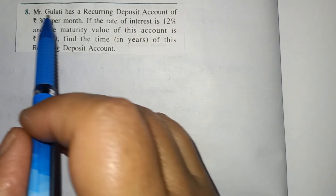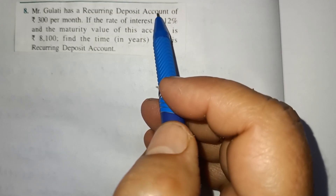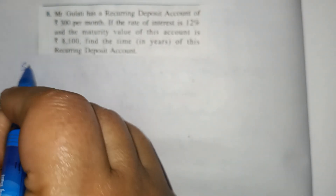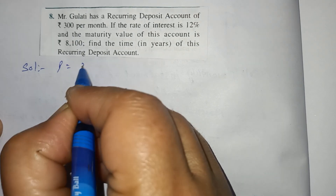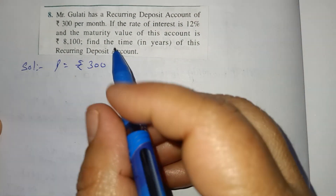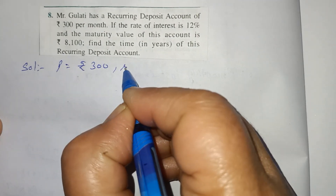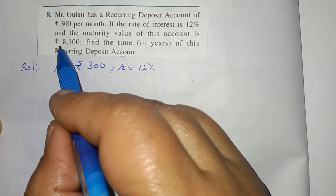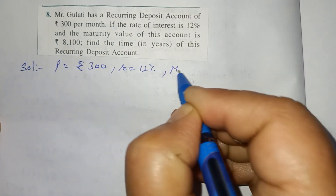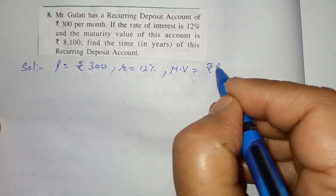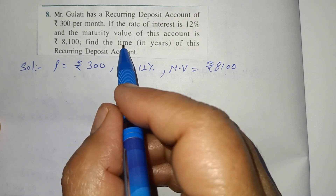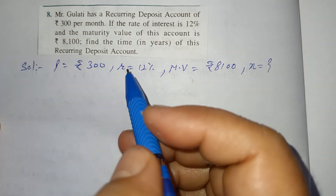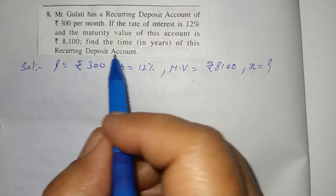Question number 8. Mr. Gulati has a recurring deposit account of Rs. 300 per month. P is equal to Rs. 300. The rate of interest is 12%, and the maturity value of this account is Rs. 8100. Find the time — time find out karna hai, means N find out karna hai — in years of this recurring deposit account.